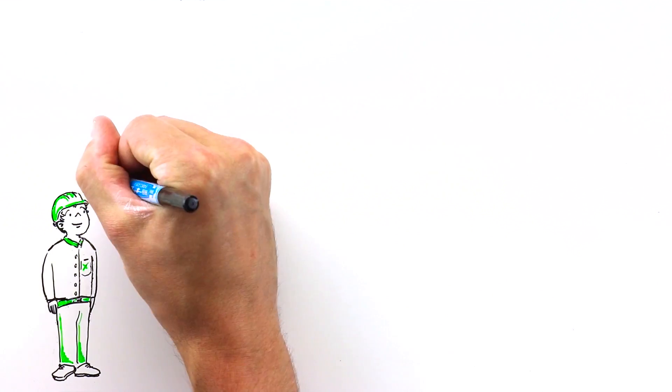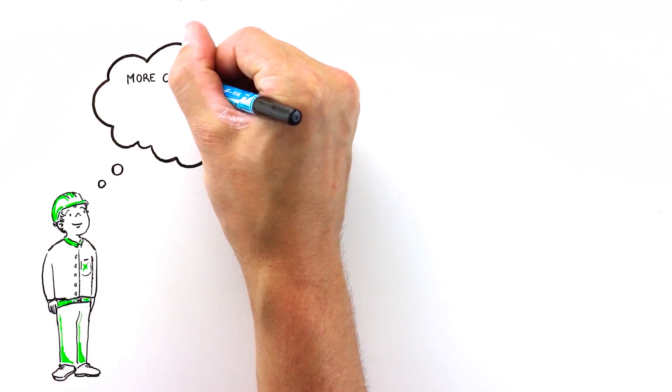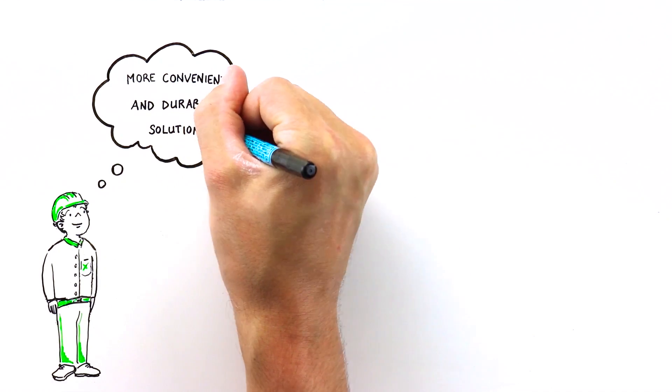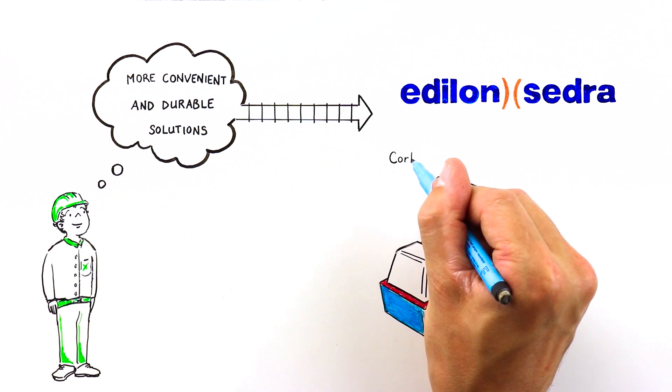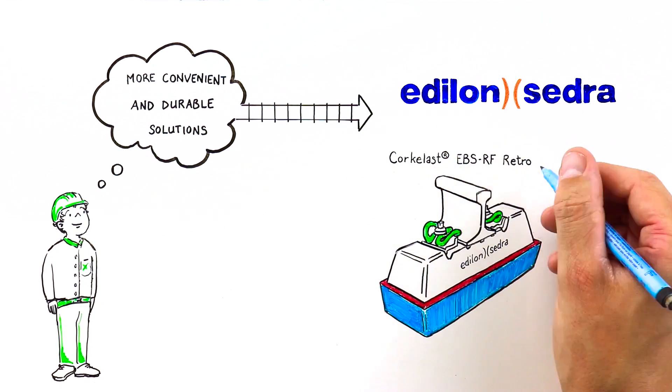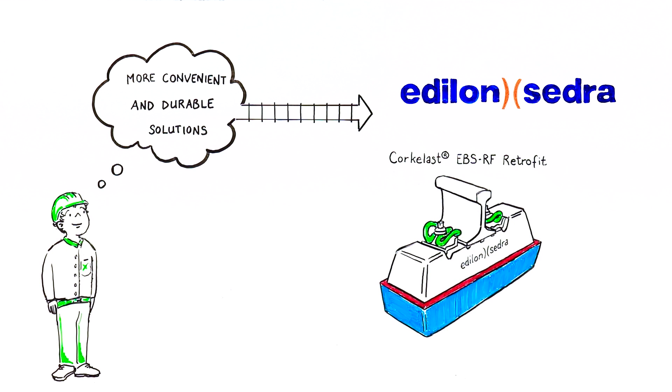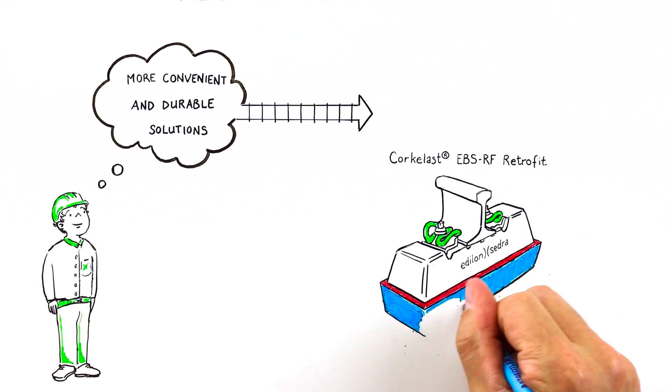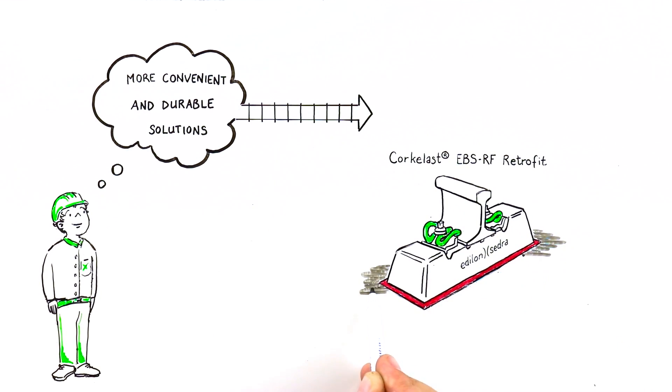Edelon Sedra track systems are born out of the need for more convenient and durable solutions. For instance, the Corkerlast EBS-RF retrofit block is prefabricated in an elastic Corkerlast tray under controlled conditions. The block and tray can be swiftly installed into the pocket of a removed booted block.